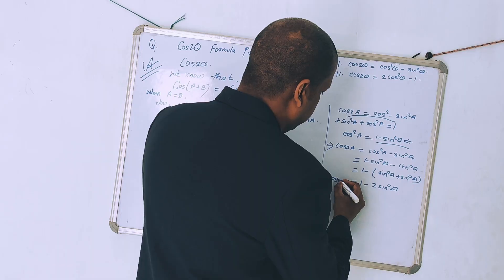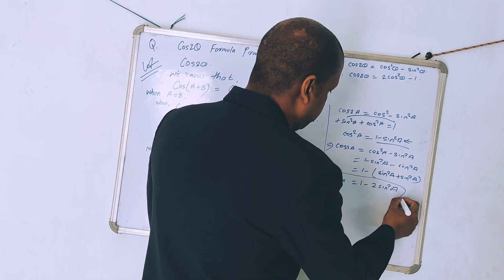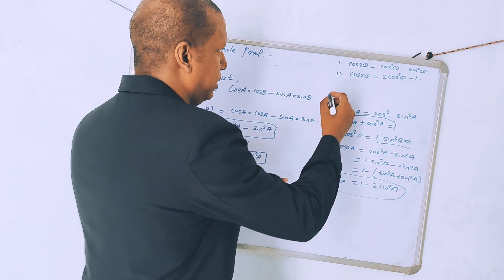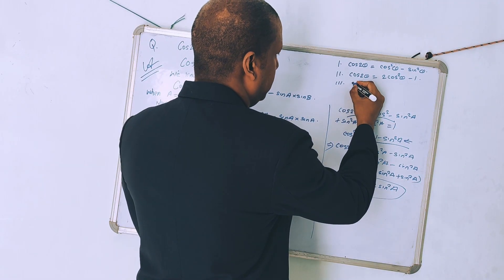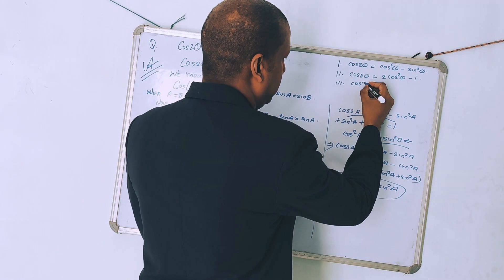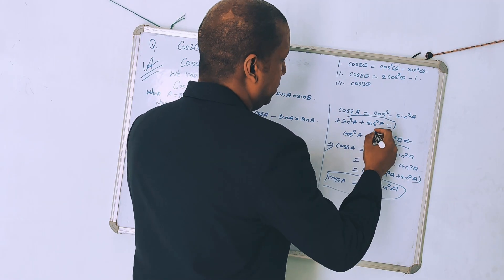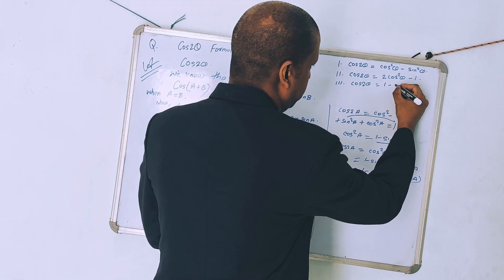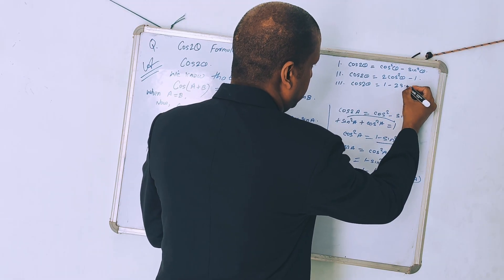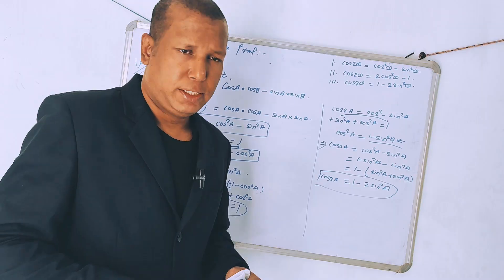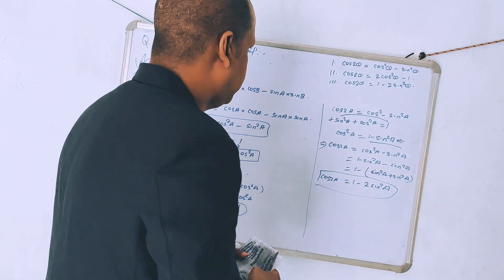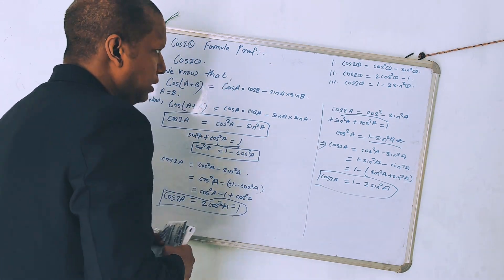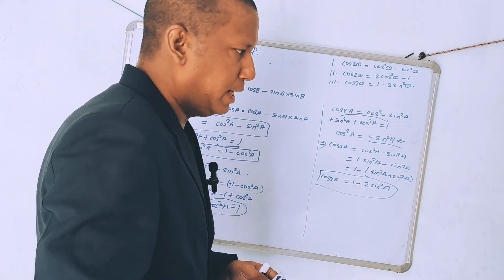So the third formula is: cos 2θ = 1 - 2sin² θ. Now I am going to get the cos 2θ formula in the form of tan.